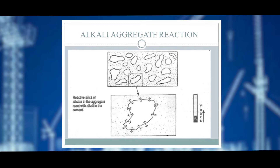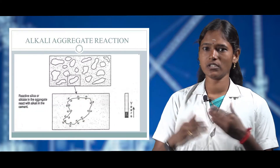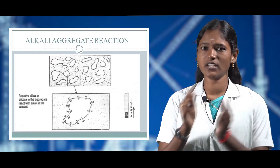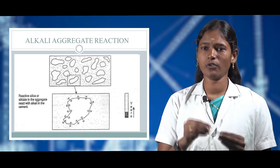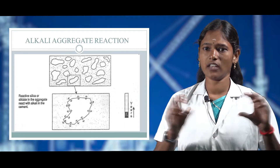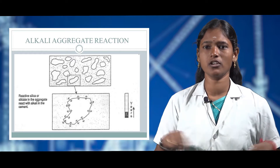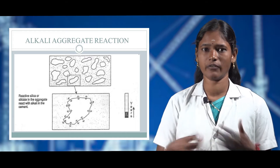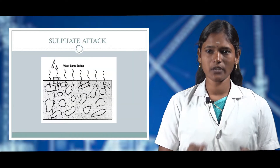In alkali-aggregate reaction, the alkalis in the aggregate react with the silica present in the cement, causing a reaction. The reactive products settle in the voids of the concrete. These voids keep on expanding as the chemical reaction takes place, creating micro-cracks, which lead to concrete cracking, spalling, delamination, and other defects.